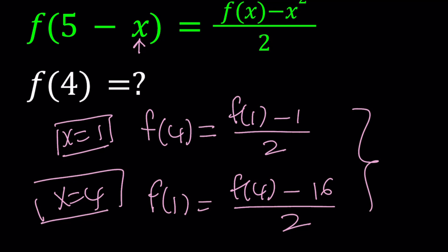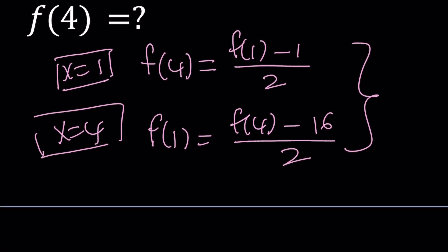So now I've got two equations and two unknowns. That is a system, and by solving that system, we're going to be able to find f of 4.